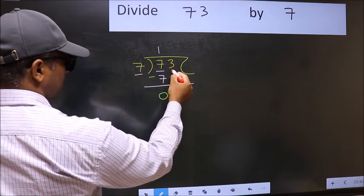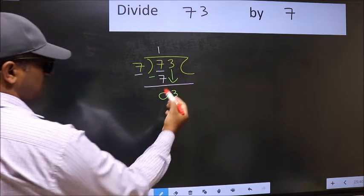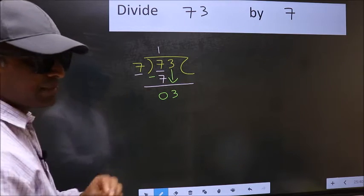After this, bring down the next number. So 3 comes down. After this step, the mistake happens.